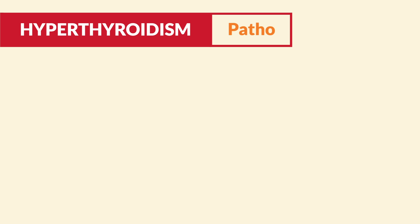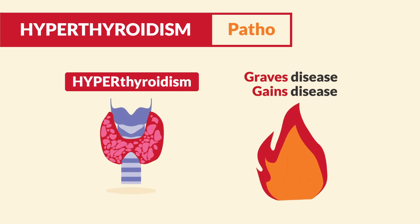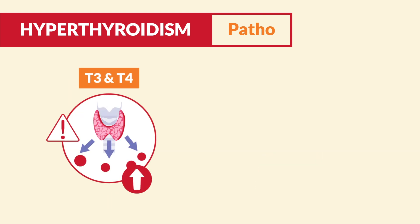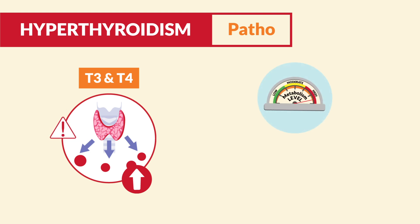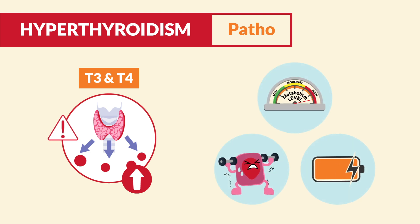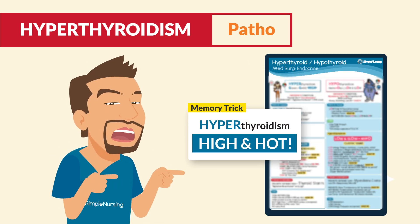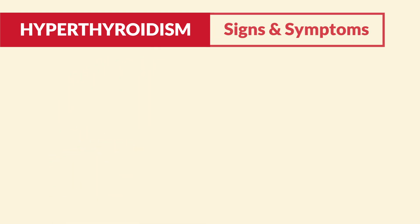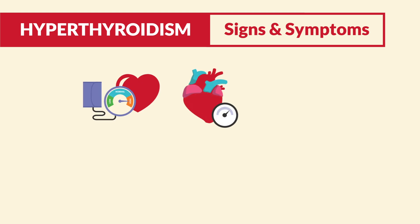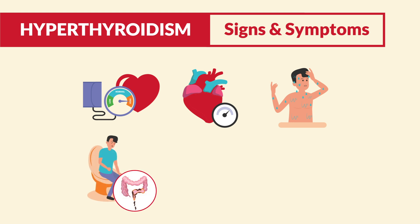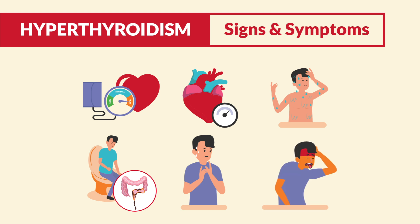With hyperthyroidism — also called Graves' disease, which I call 'Gaines' disease because we gain a lot of energy — the overactive thyroid gland produces too much T3 and T4, leading to high metabolism, cellular activity, and energy use. Everything is high and hot. Starting with vital signs: blood pressure will be high, high heart rate with palpitations, high temperature including sweating. The other organs will be high as well: high GI tract with diarrhea, high mood with anxiety and always on edge, and even heat intolerance.